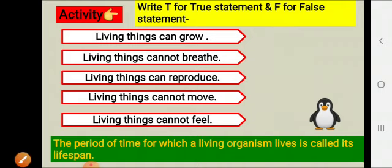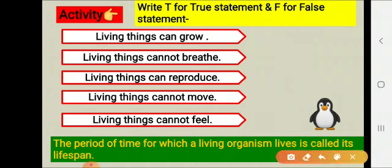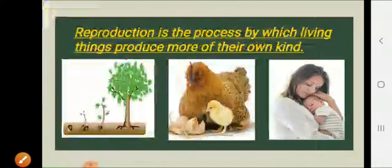All living things live for a certain period of time and after that they die. The period of time for which a living organism lives is called its life span.